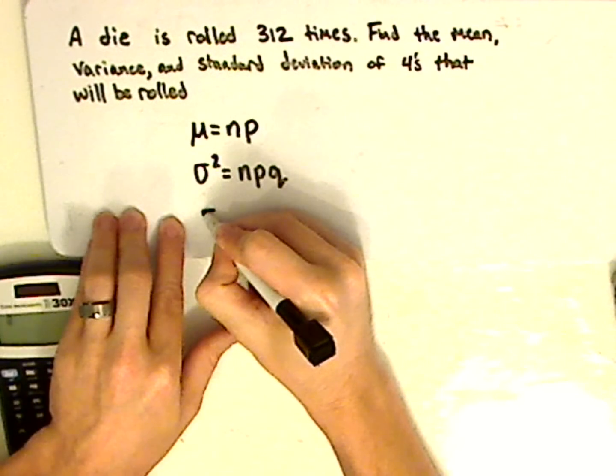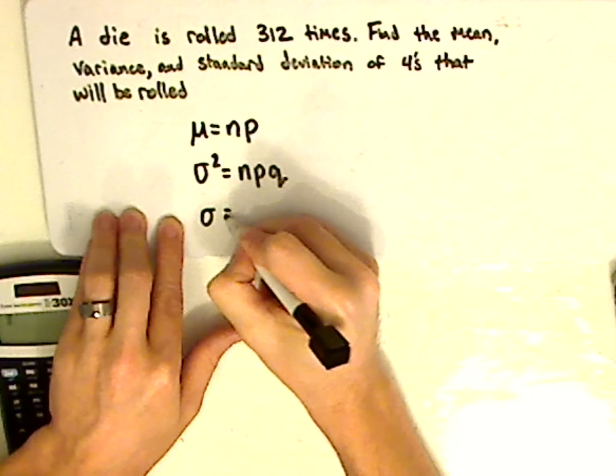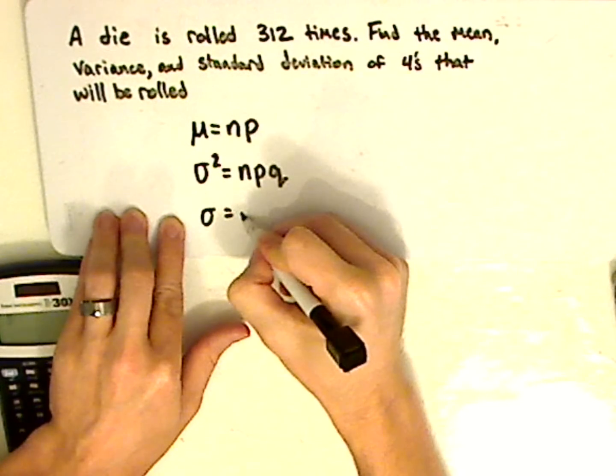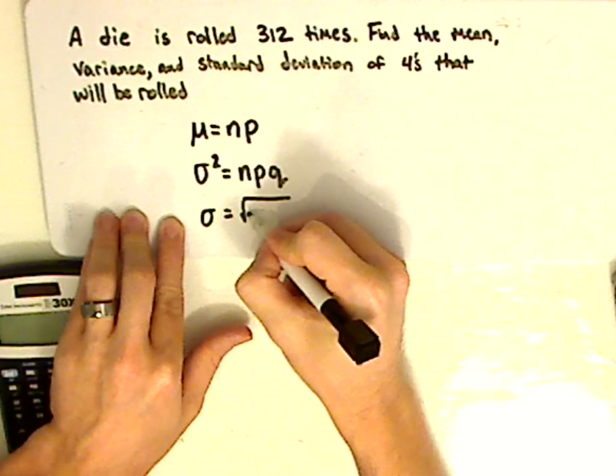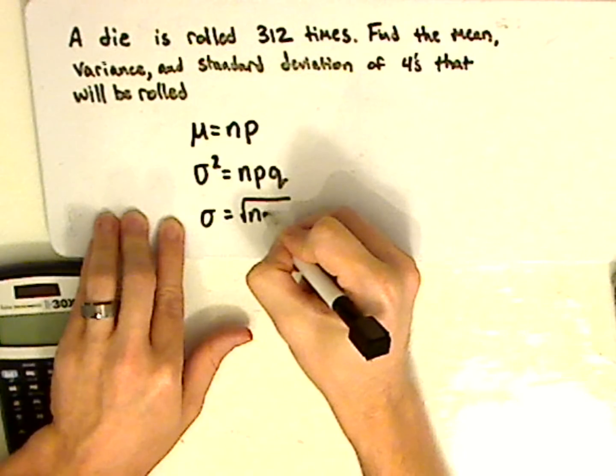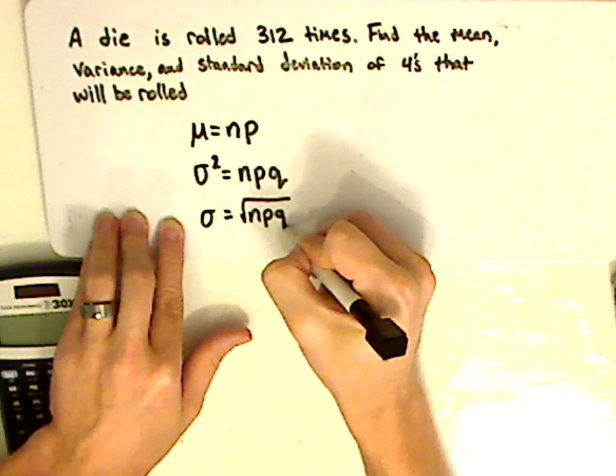Now, to find the standard deviation, you just take the square root of the variance. So it would be the square root of n times p times q.